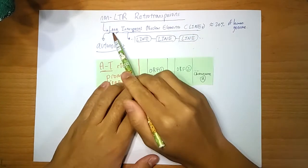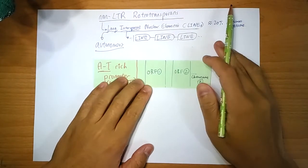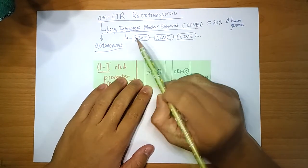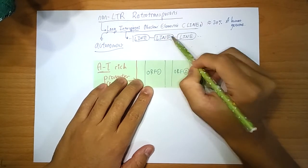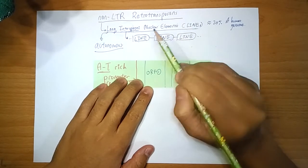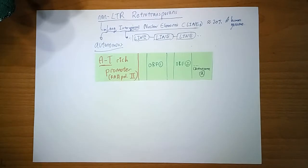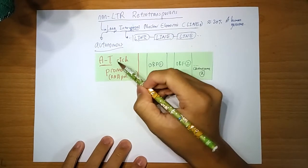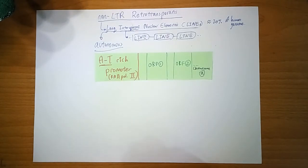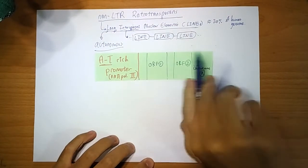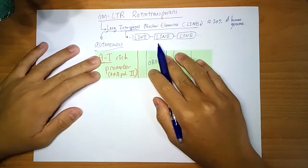But never mind, the long interspersed nuclear elements called LINEs, there's a short version we'll talk about later, is interspersed because within the genome it's appearing like that. Not direct repeat, one after another, but there are some things in between. And these are autonomous, they can move on their own. Within this, there is the AT-rich promoter.